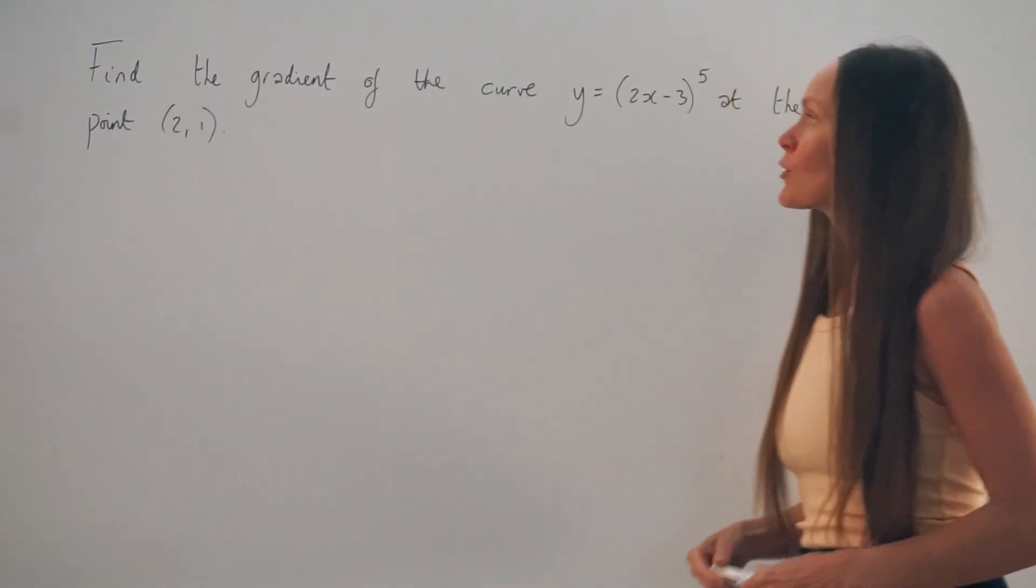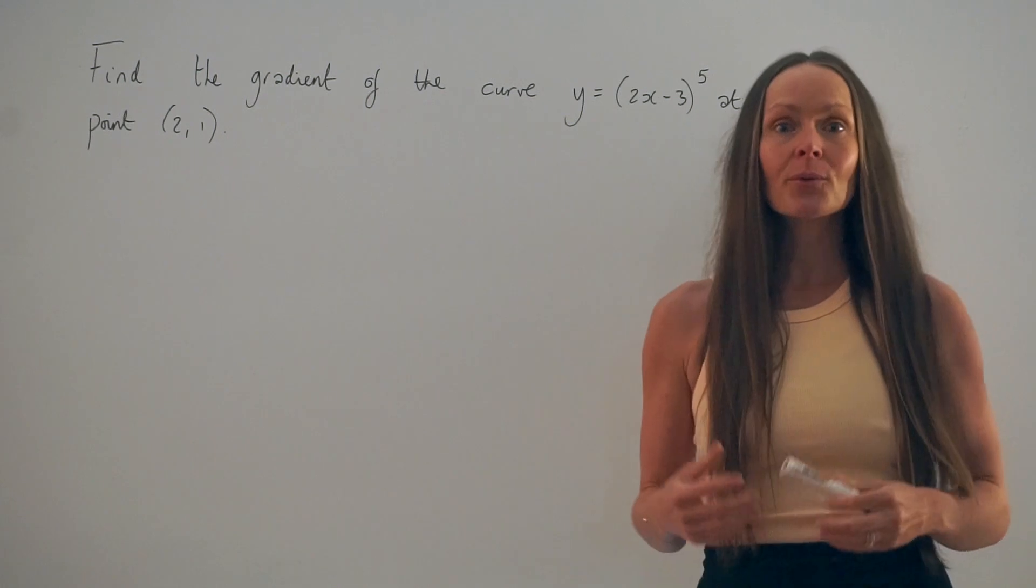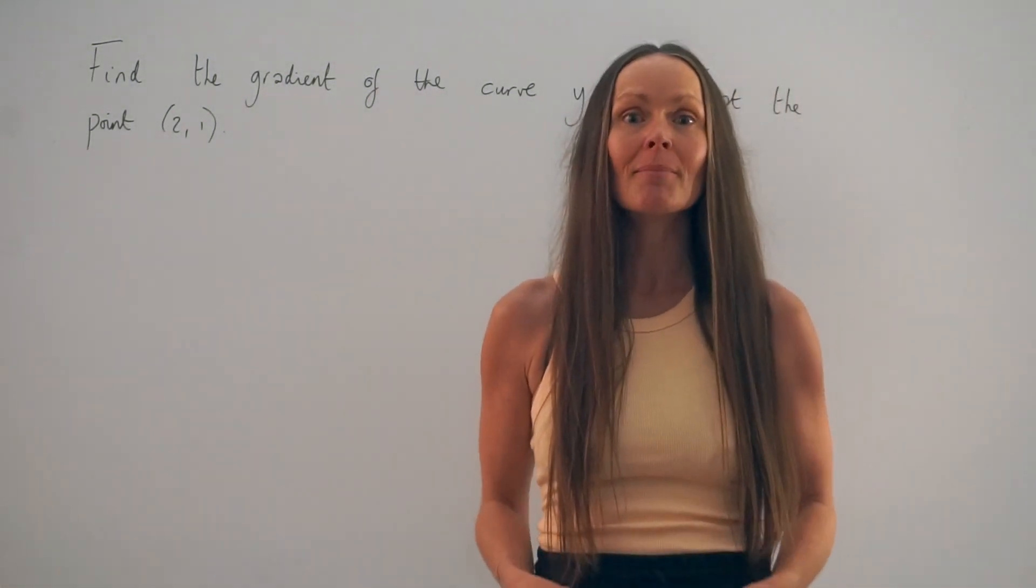In this question, we have to find the gradient of the curve y equals (2x - 3) to the power 5 at the point (2, 1). So whenever a question says find the gradient of a curve, you need to remember to differentiate.